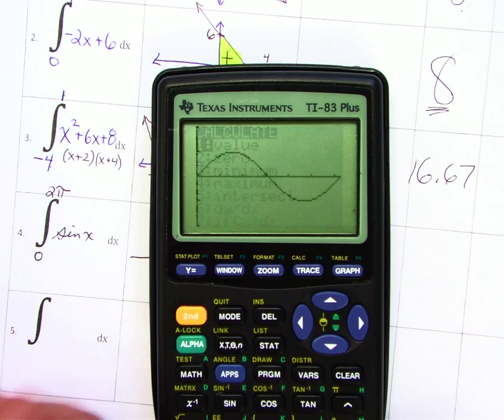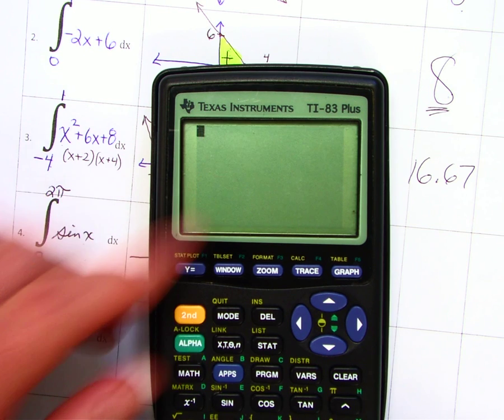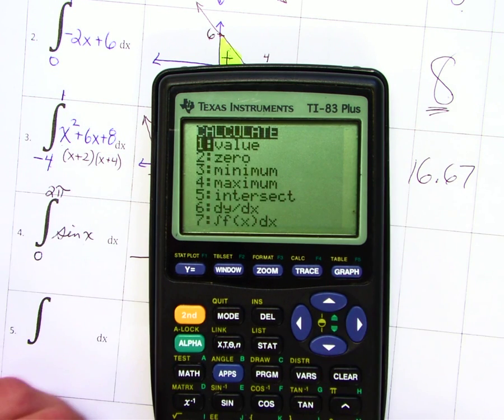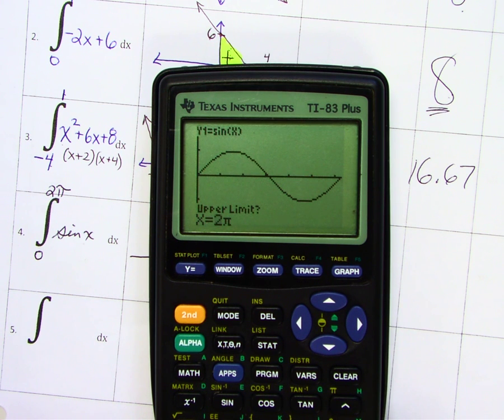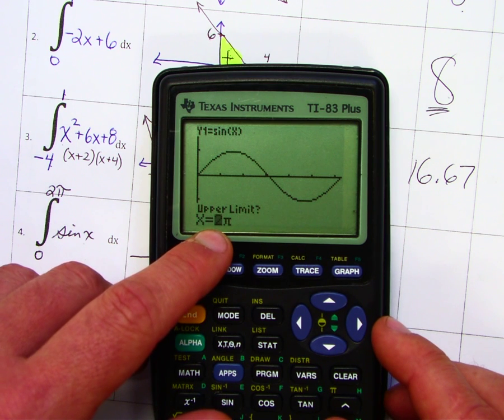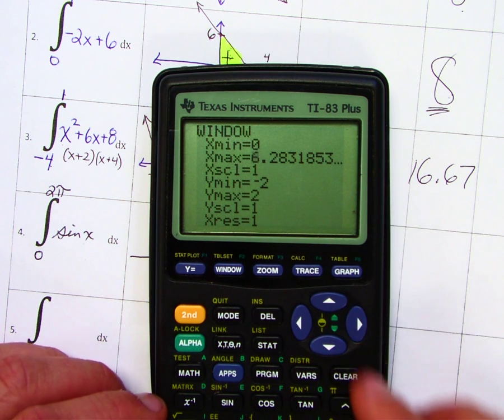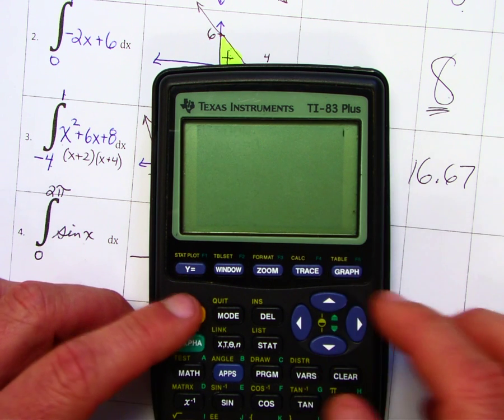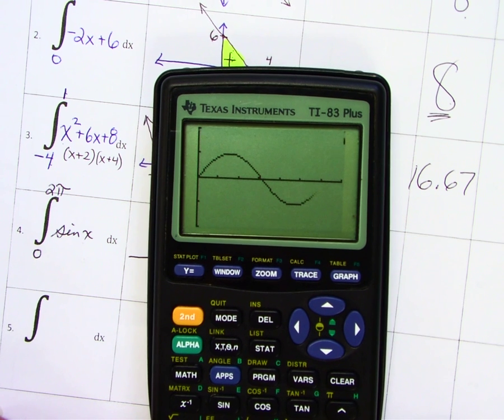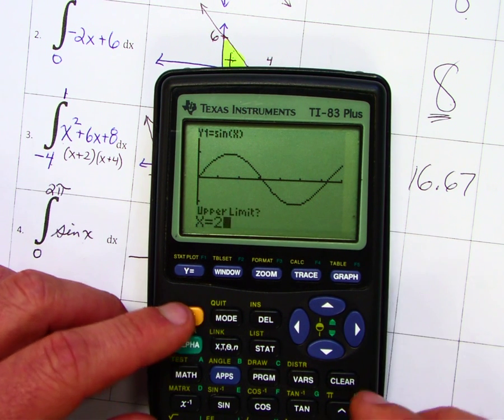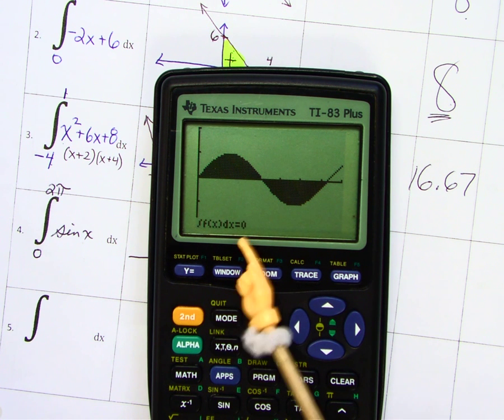So I'm going to evaluate at this from zero to 2 pi. What happened? Notice that 2 pi is approximately 6.28, and my window doesn't go that high. Let's change this to seven.